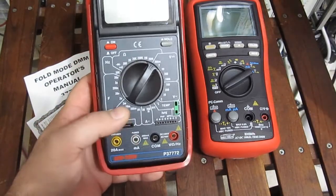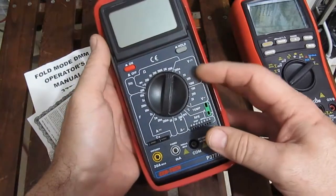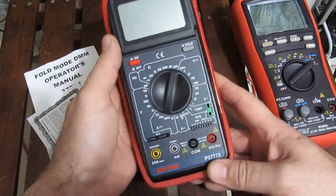It's a 2000 count meter. This meter was purchased from Harbor Freight in 2009 and this is the end of 2015, so this meter is about six years old.